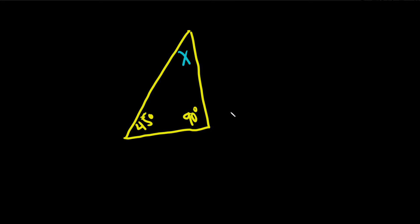In this problem, we're given a triangle. We have 90 degrees here, 45 degrees here, and then x is here, and we have to find the measure of x.